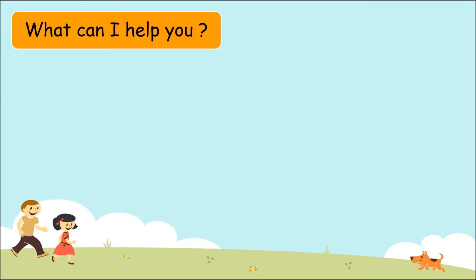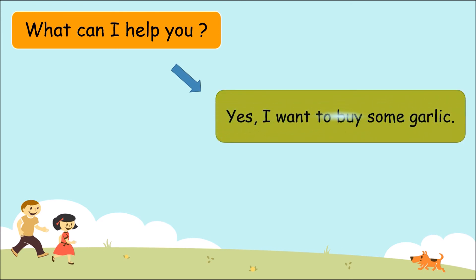Good. The new is, what do you want? What can I have for you? Yes, I want to buy some garlic. Good. What can I have for you? I want to buy some orange. Alright. What can I have for you?